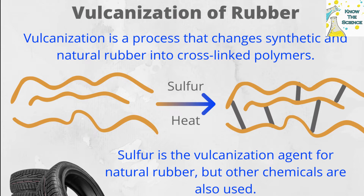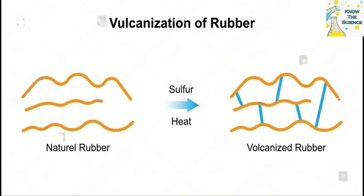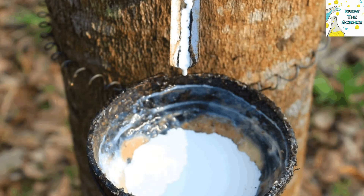Vulcanization involves cross-linking the polymer chains in rubber with sulfur or other vulcanizing agents to improve its mechanical properties, such as elasticity, strength, and resistance to heat, chemicals, and environmental factors.